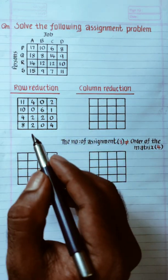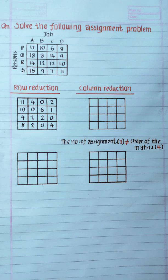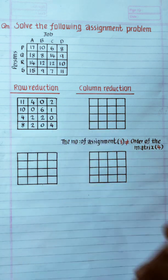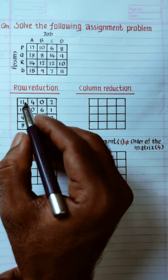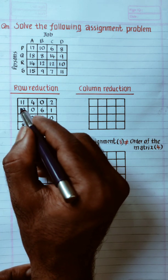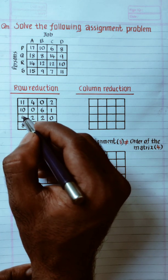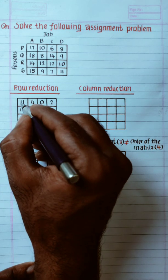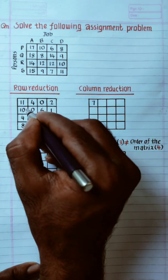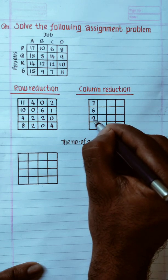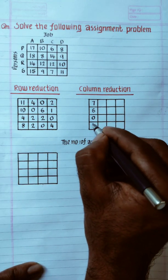Now you have to do a column reduction. In this table, you have to do a column reduction. The minimum is 4. If 4 is subtracted: 11 minus 4 is 10 minus 4, so that's 7. 4 minus 4 is 0. 8 minus 4 is 4. 10 minus 4 is 6, then 0, then 8 minus 4 is 4.